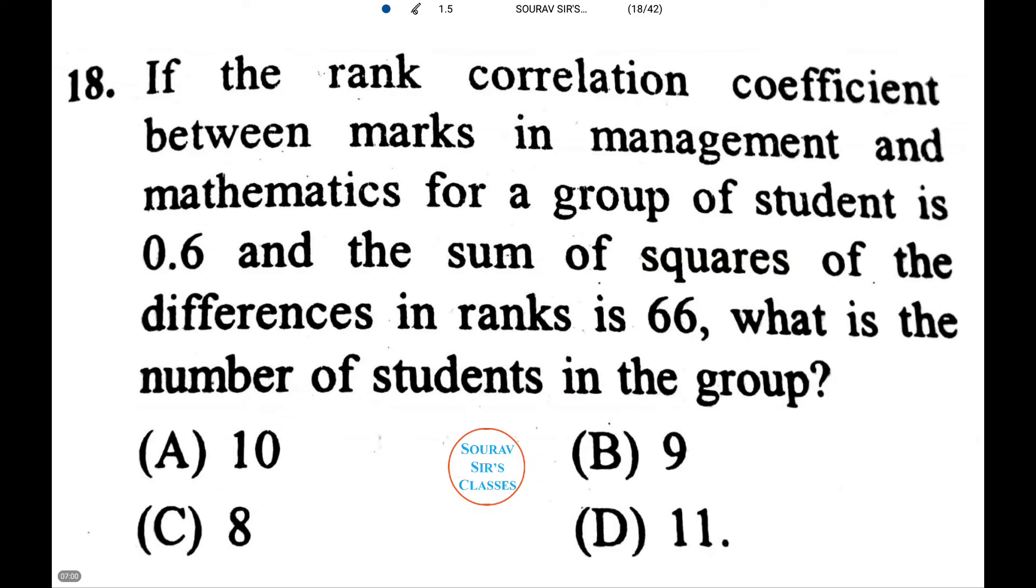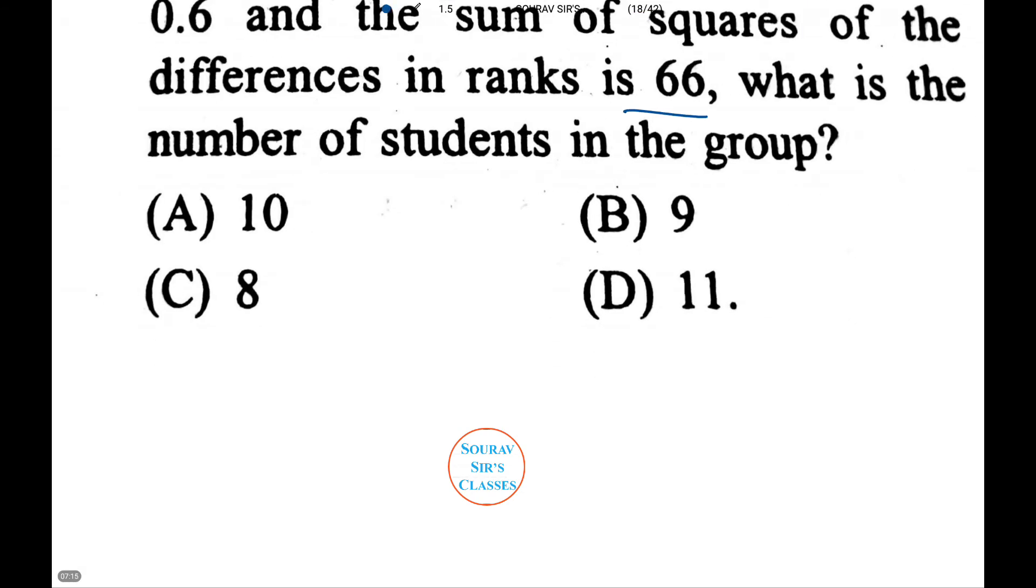Now we will do a sum on rank correlation. If the rank correlation coefficient between marks in management and mathematics for a group of students is 0.6 and the sum of squares of the difference in ranks is 66, what is the number of students in the group?